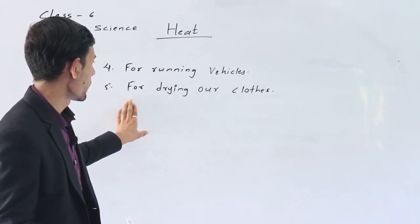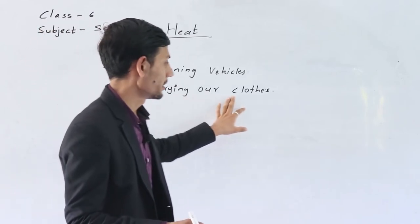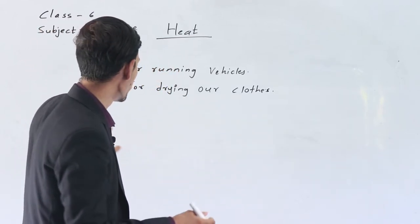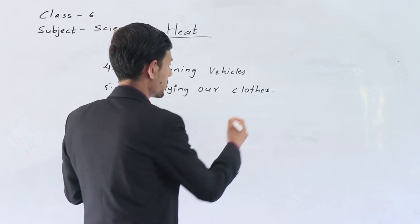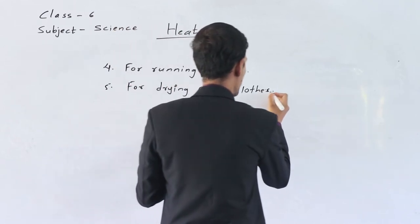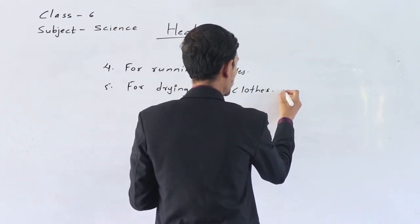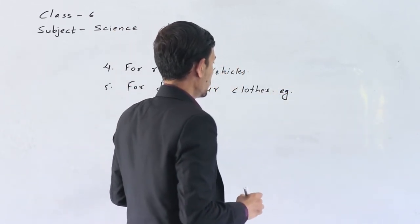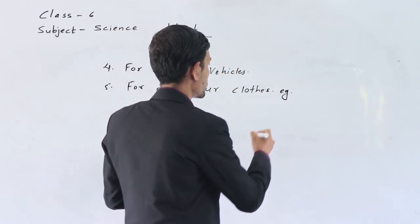For drying our clothes we mainly use sunlight. Sunlight is the primary source of heat energy used for drying clothes.